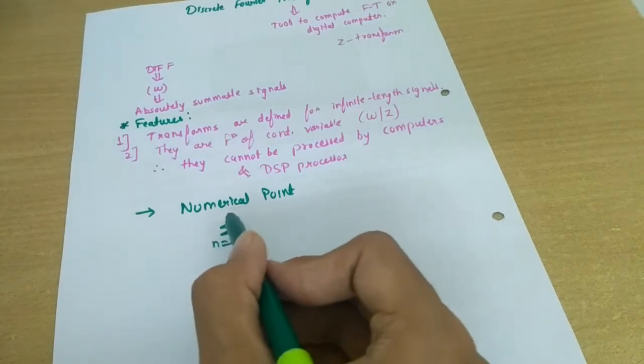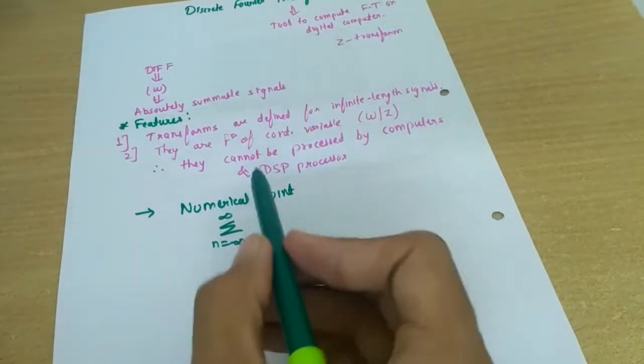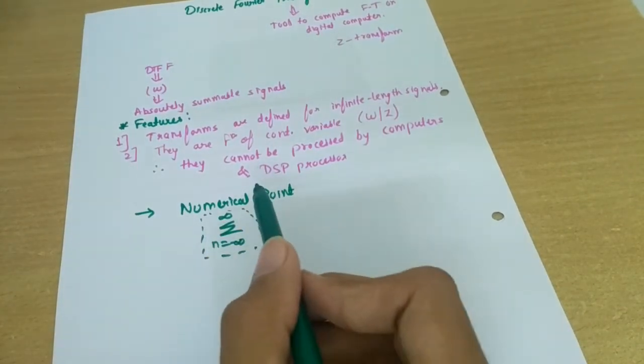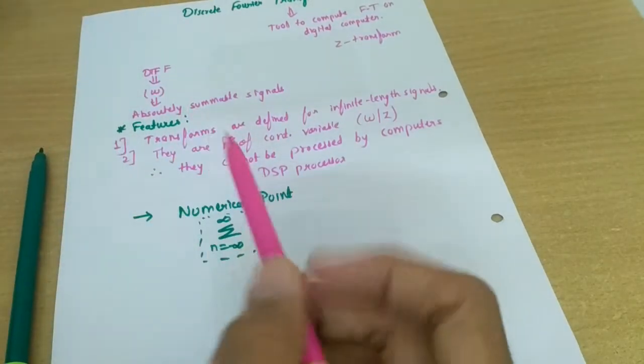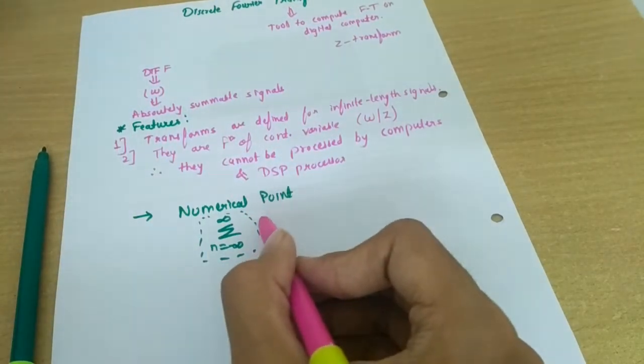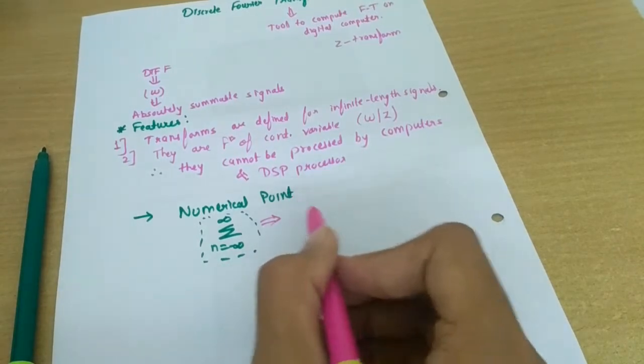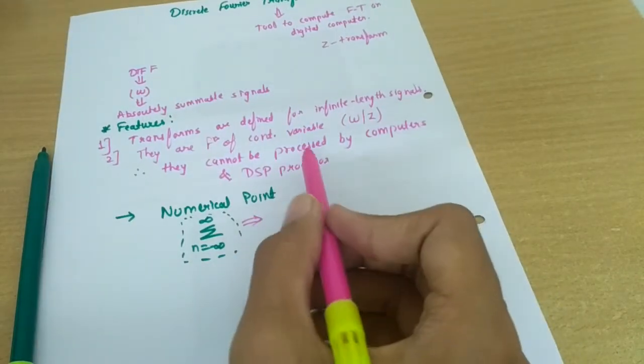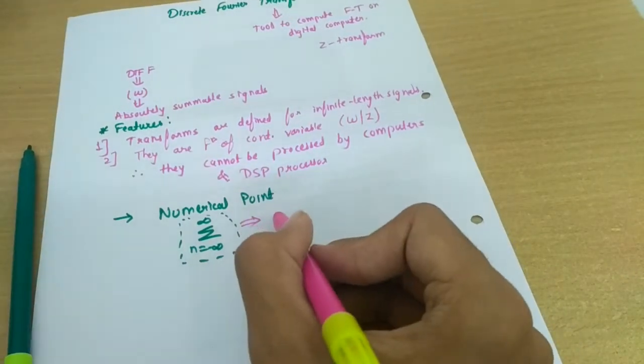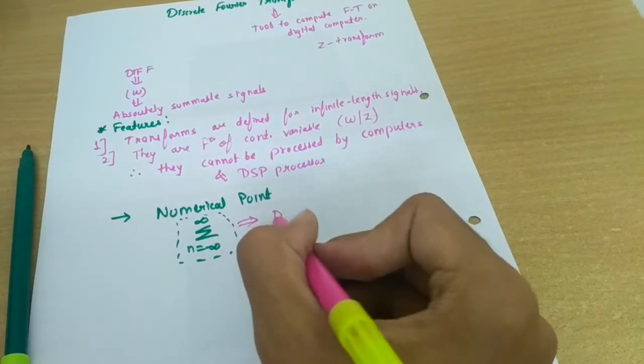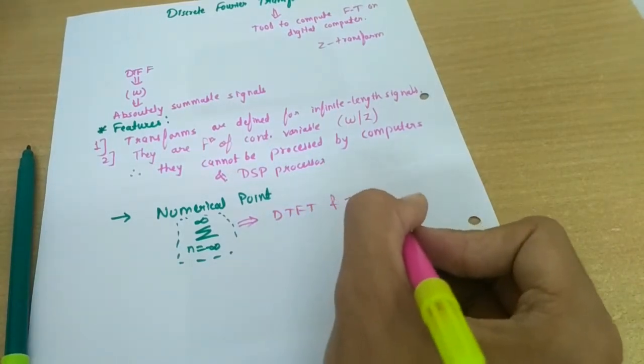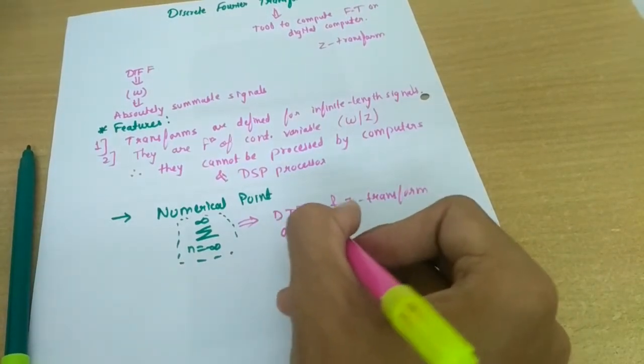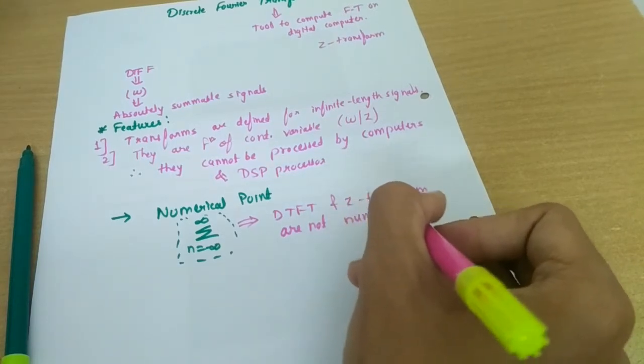That is, in both of them, DTFT and Z transform, we have this term that summing - n is from minus infinity to plus infinity. So in order to evaluate both of the transforms we need to calculate this infinite sum. This infinite sum cannot be numerically computable. So it implies that DTFT and Z transforms are not numerically computable.